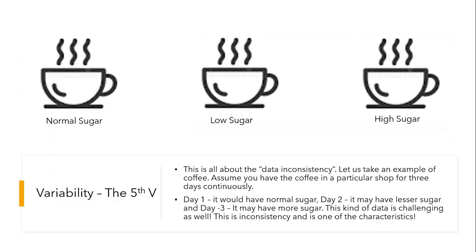The next one is variability — the fifth V. This is about data inconsistency. Take a simple example of coffee: you visit a coffee shop three days in a row — day one it has normal sugar, day two it has less sugar, day three it has more sugar. It depends on the person who prepares it, and there can be variation. This kind of data is challenging. Normal sugar, low sugar, high sugar — three different data points from the same source. This is data inconsistency.